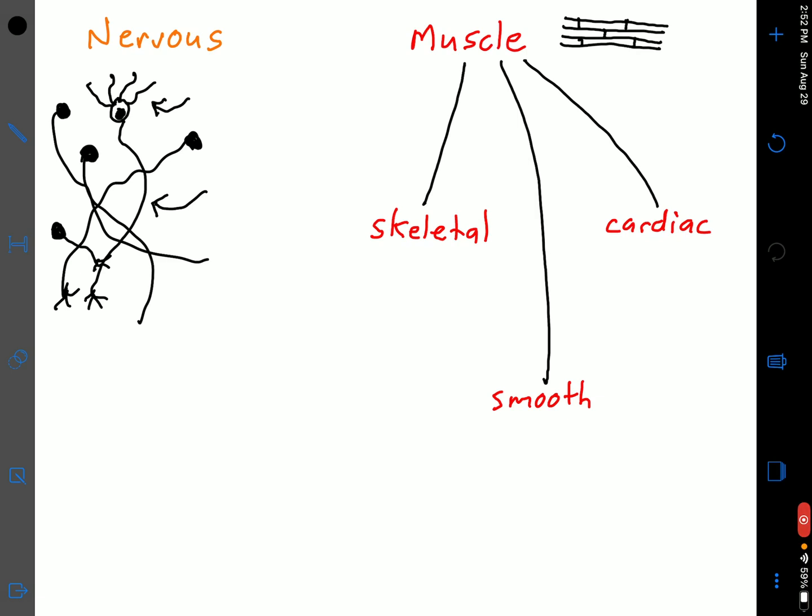What that means is if it's striated and it's obviously striated, you're most likely looking at skeletal muscle. It will look like this: you have long fiber-shaped cells.